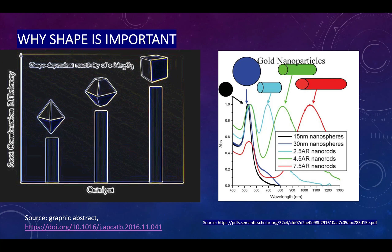On the right-hand side, gold nanoparticles and their optical absorption are shown. A band diagram shows the full absorbance wavelength range for spherical small, spherical bigger, and various sizes. It can be clearly seen that the optical properties and absorption depend on the size of the nanoparticles. This is again very, very important.